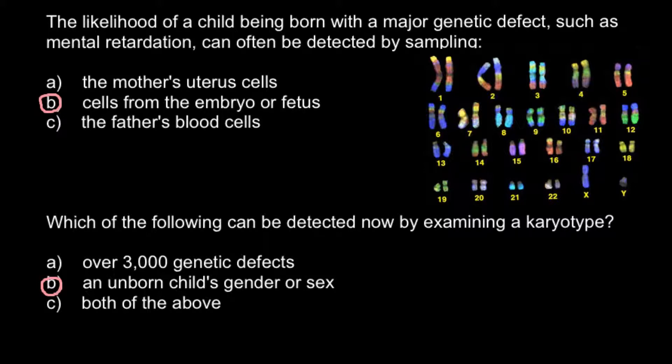By current methods, studying a karyotype we can only detect about 100 genetic disorders. In order to be able to find 3,000 genetic disorders, we have to study the genome not at the chromosome level but at the molecular level, and we have to perform whole genome sequencing of that particular person. Then we can compare with a database of known genetic disorders to find what caused the disorder. But again, we cannot find 3,000 genetic disorders just by studying the karyotype.